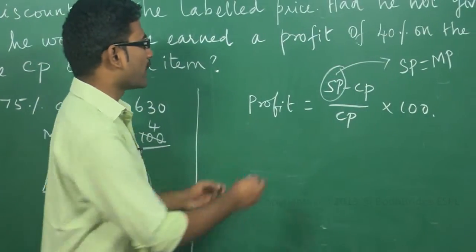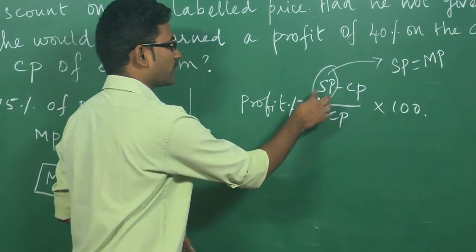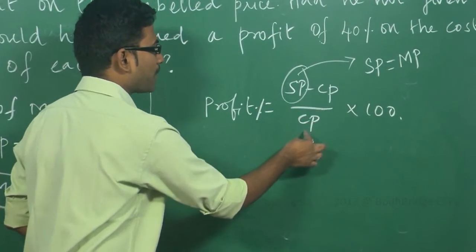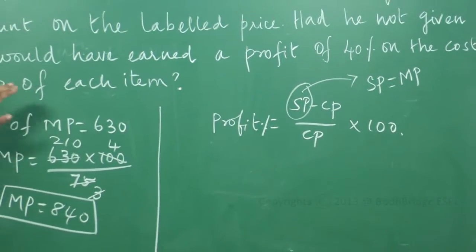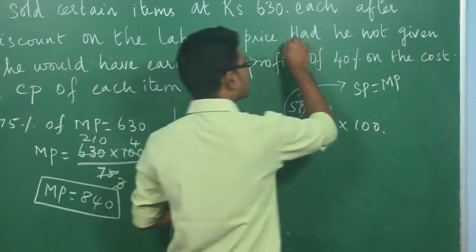So profit percentage formula is, profit percentage is equal to SP minus CP by CP into 100. Here they had given, SP is not given. But the statement in this question is,